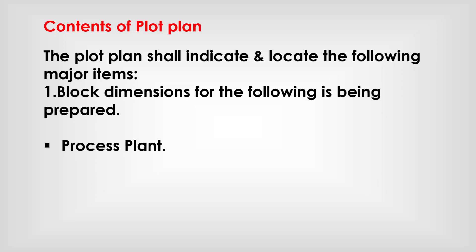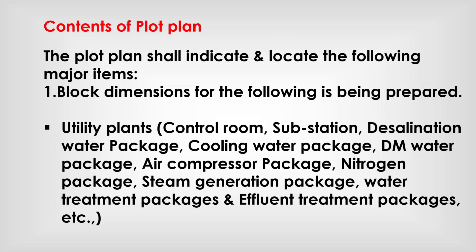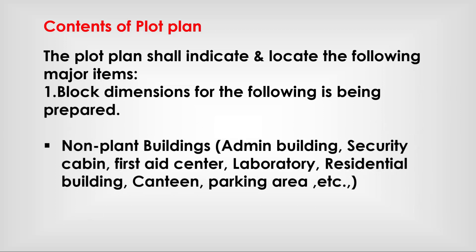The plat plan shall indicate and locate the following major items: process plants, utility plants, control rooms, substations, and utility packages such as desalination water, cooling water, DM water, air compressor, nitrogen, steam generation, water treatment, and effluent treatment packages. Non-plant buildings include admin building, security cabin, first aid center, laboratory, residential building, canteen, and parking area.